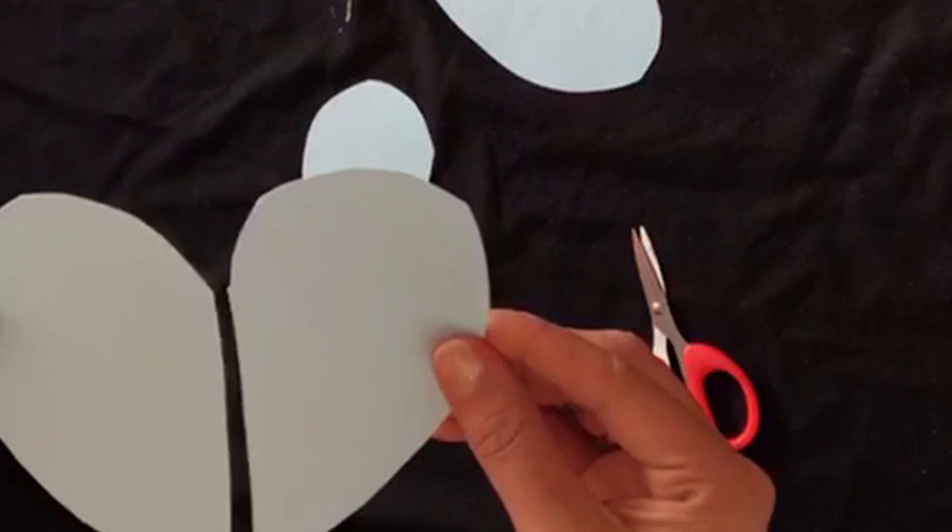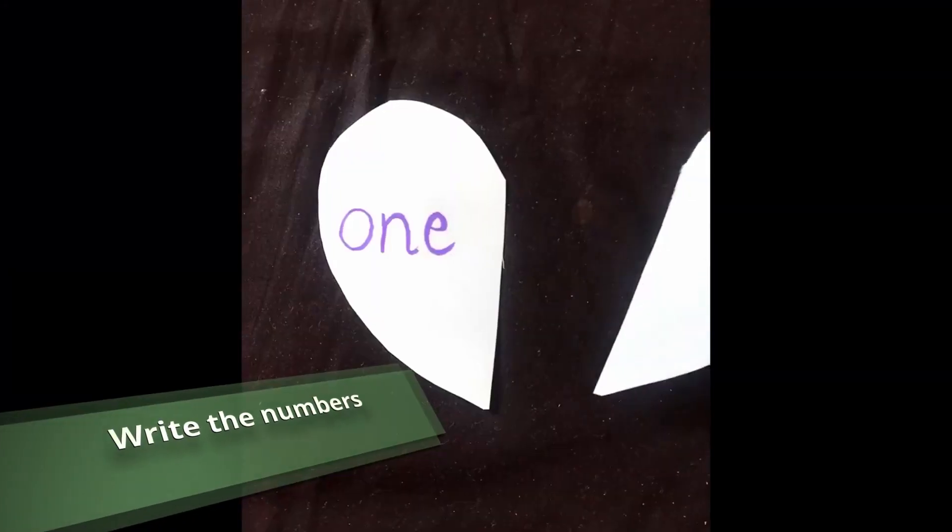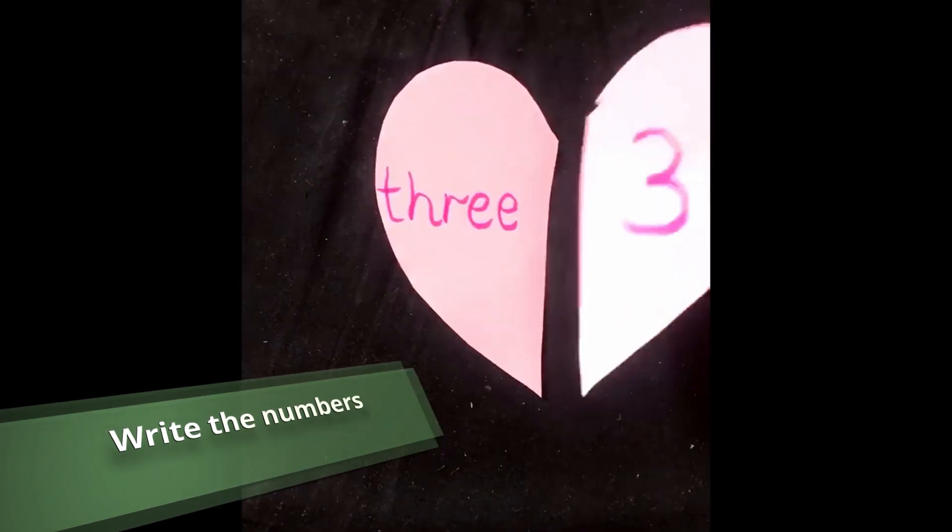On one side, write the number from 1 to 10. On the other side, write its spelling.